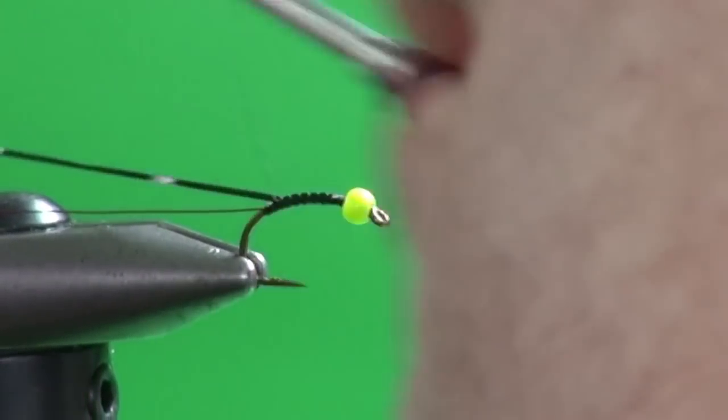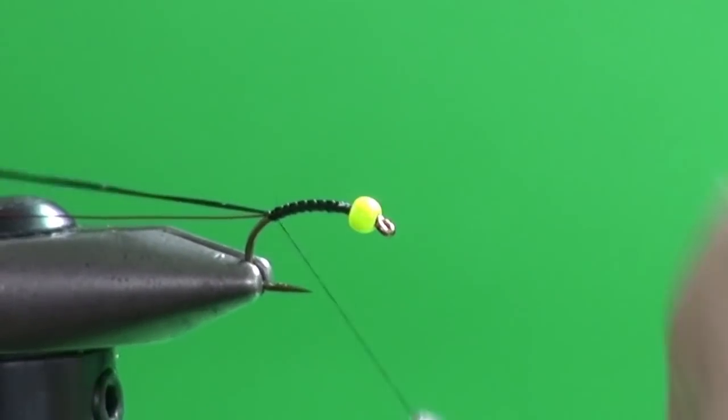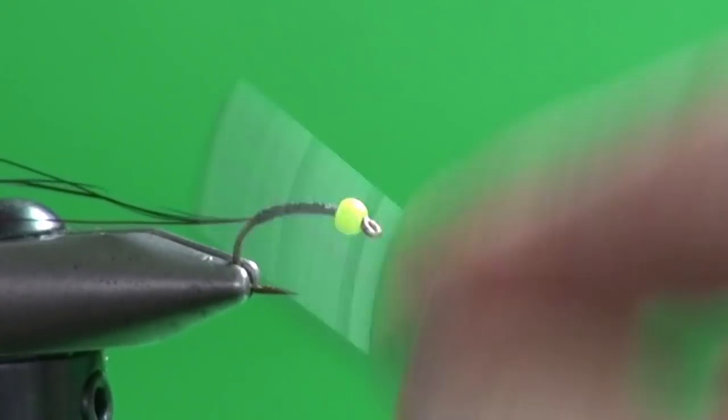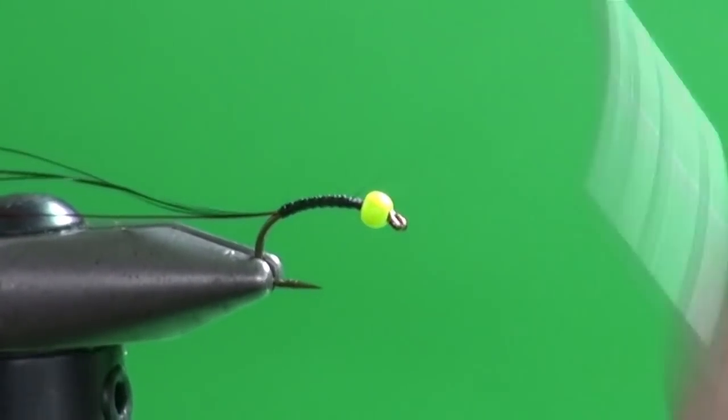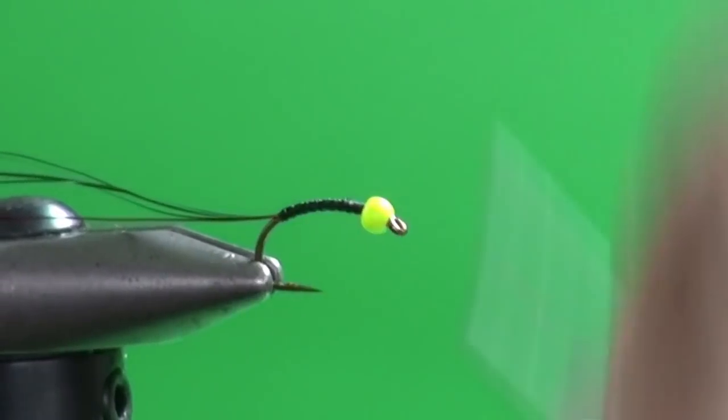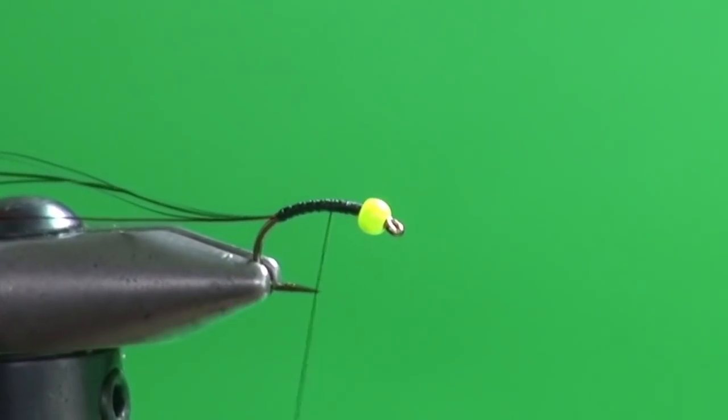I'm just going to secure that down. And because Flashabou is not the most durable material in the world, we're going to add a little super glue underneath to reinforce it. And of course, we will be coating the fly after. But right now, I'm just going to build up a little bit of taper.